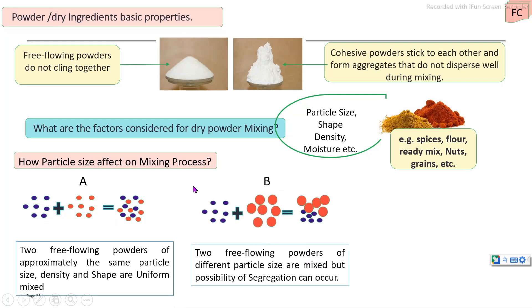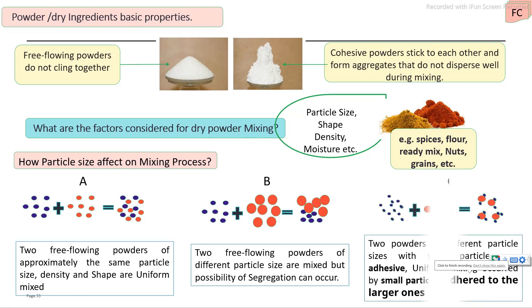If the particle sizes are different — both are free flowing ingredients, first and second — but particle sizes are different: smaller size and medium size. This possibility can affect the mixing unit operation, with the possibility of segregation occurring. The smaller size particles are retained at the bottom and the medium or large size particles are retained at the top.